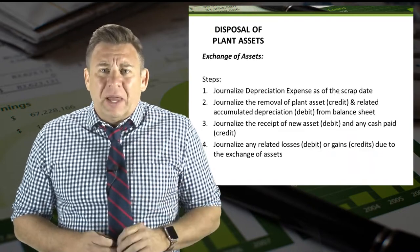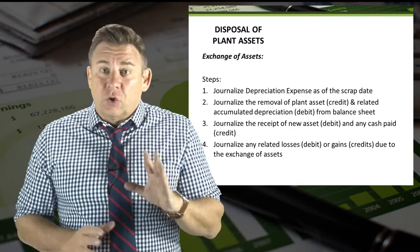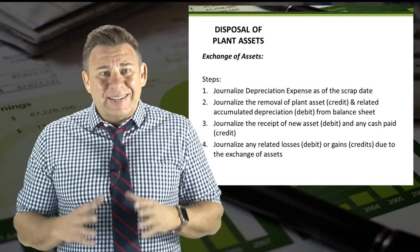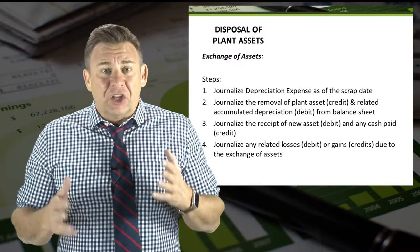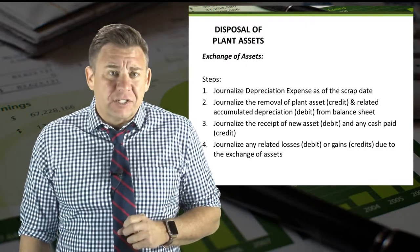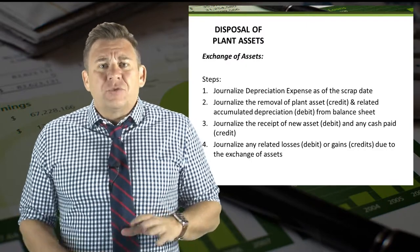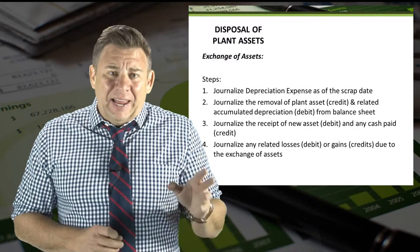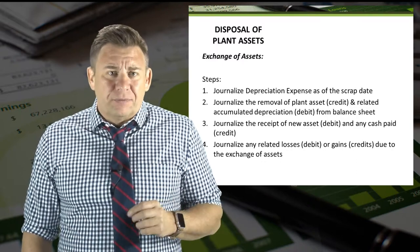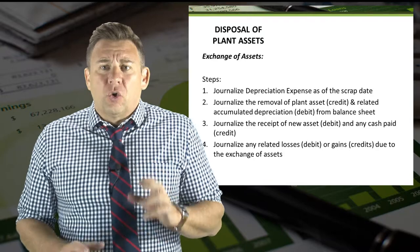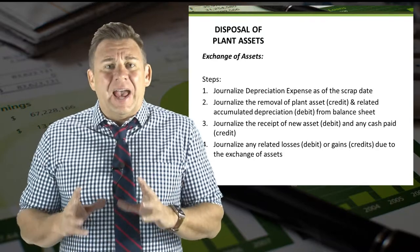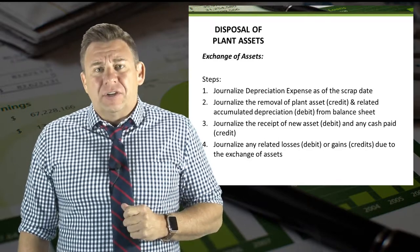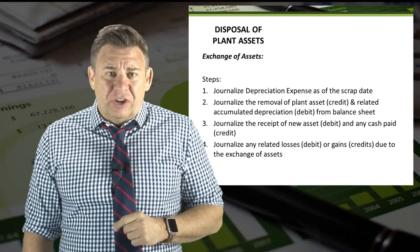When we exchange plant assets, there are a few steps we need to do in order to make the proper journal entry. The first step is to record depreciation expense as of the scrap date, since it is unlikely that the accumulated depreciation account has the correct balance already. Next, we need to remove the asset from our balance sheet by zeroing out the plant asset and accumulated depreciation accounts. Additionally, we need to record the new asset as well as any cash paid in the transaction. Finally, we need to record any gain or loss related to the exchange of assets.